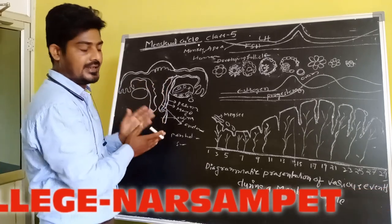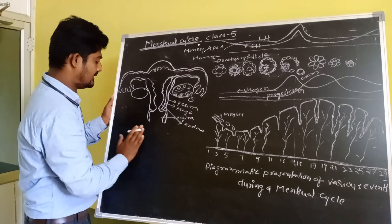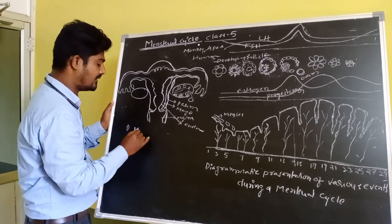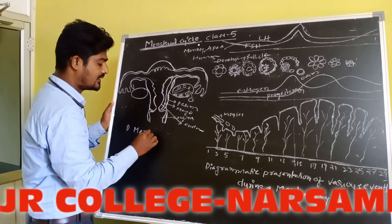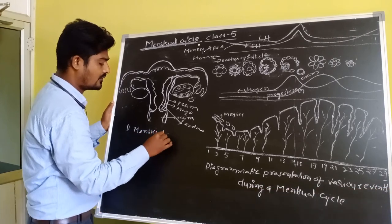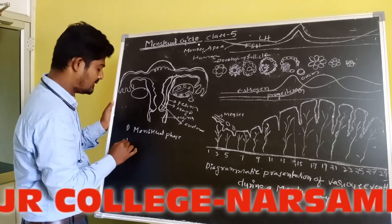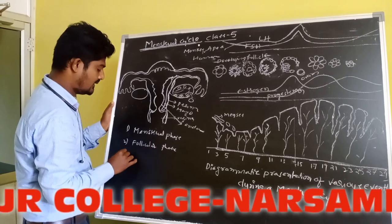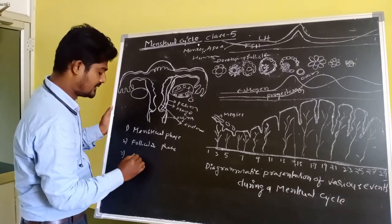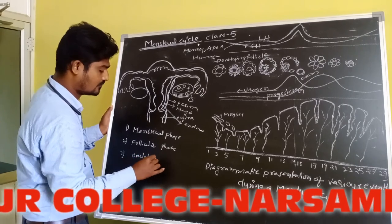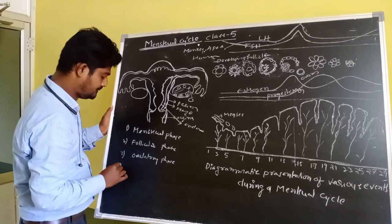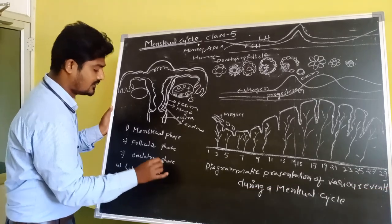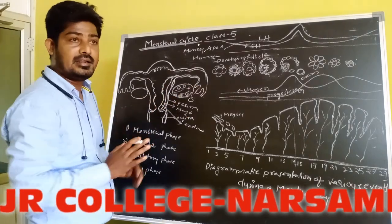The Menstrual Cycle is completed by four phases: number one, the Menstrual Phase; number two, the Follicular Phase; number three, the Ovulatory Phase; and number four, the Luteal Phase.